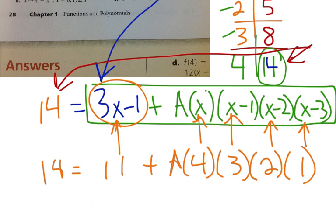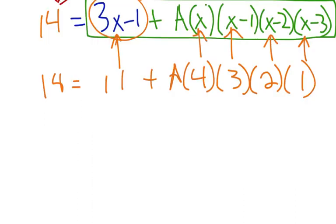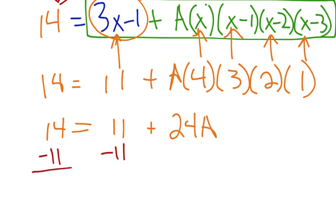And then you multiply it out, and this part is going to give us 24a plus our 11 equals the 14. So we subtract the 11, that's going to give us 24a equals 3.